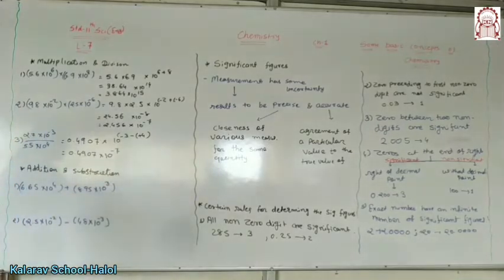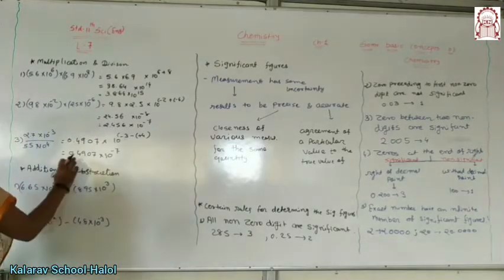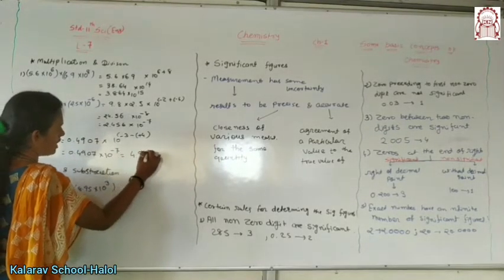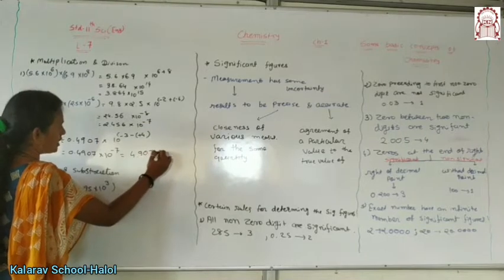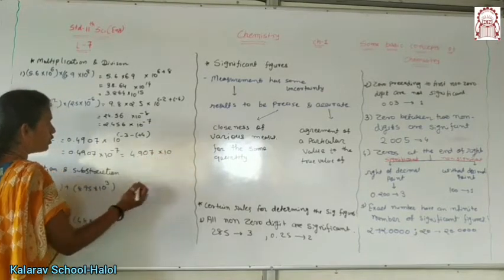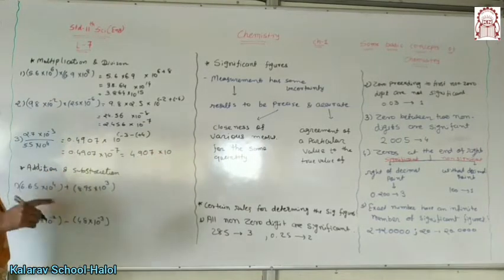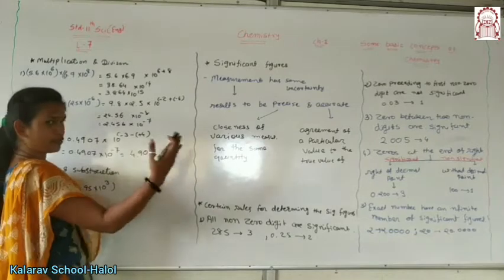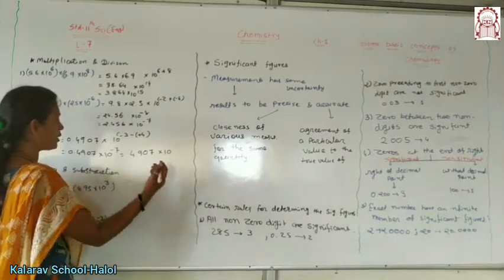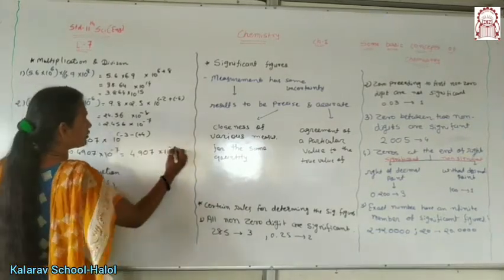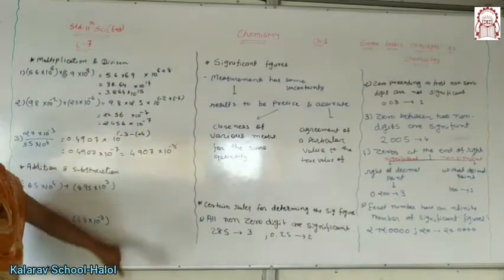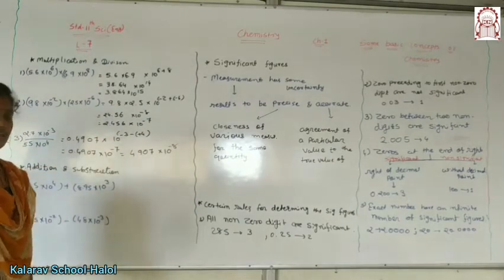So here we have minus 7. We have to convert 0.4907 to 4.907. Here we have to move 1 point — that is plus 1. This is our multiplication and division.